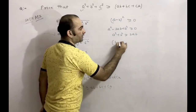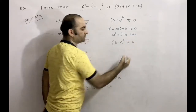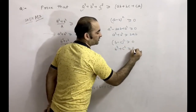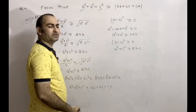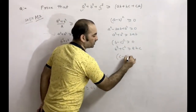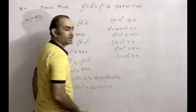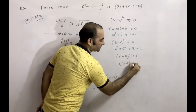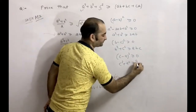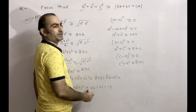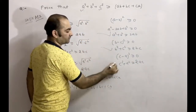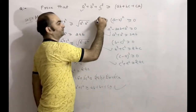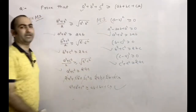Similarly, (b - c)² ≥ 0 gives b² + c² ≥ 2bc. And (c - a)² ≥ 0 gives c² + a² ≥ 2ac. Adding all three equations, we get the same result: a² + b² + c² ≥ ab + bc + ca. That is Method 3. You can use any of these methods.